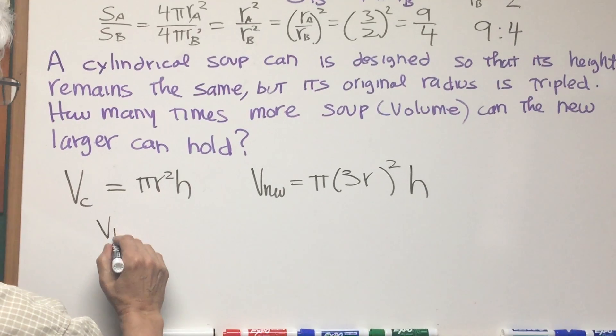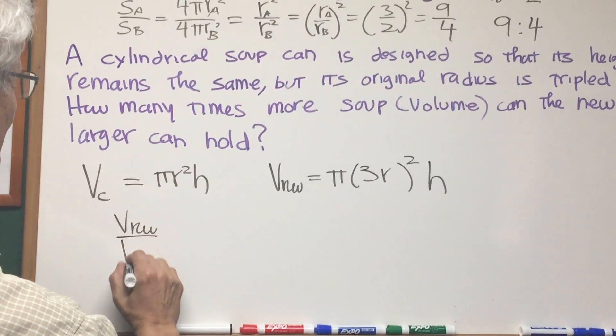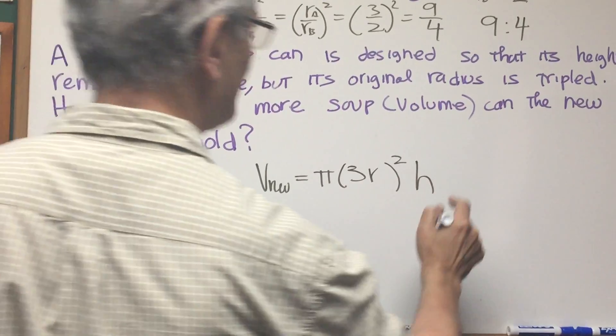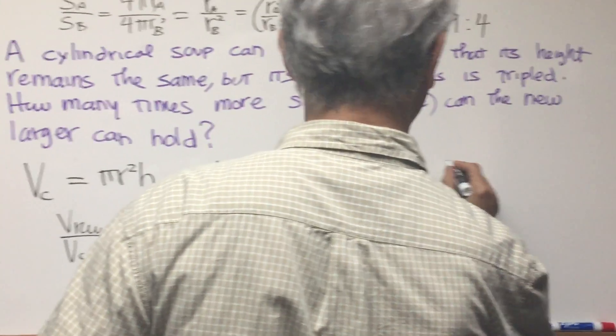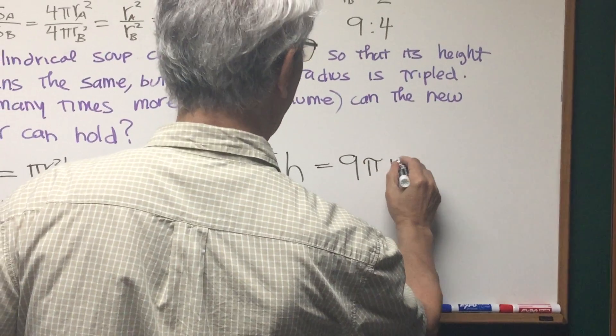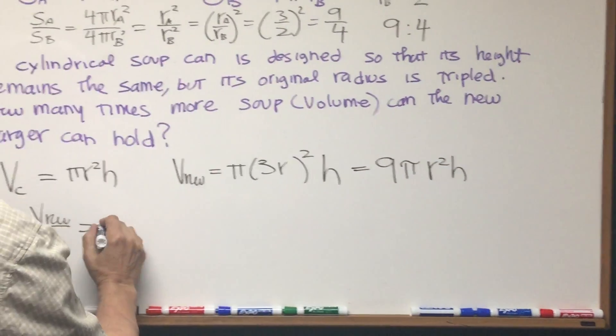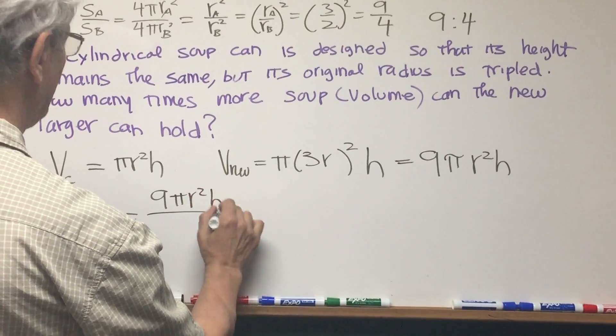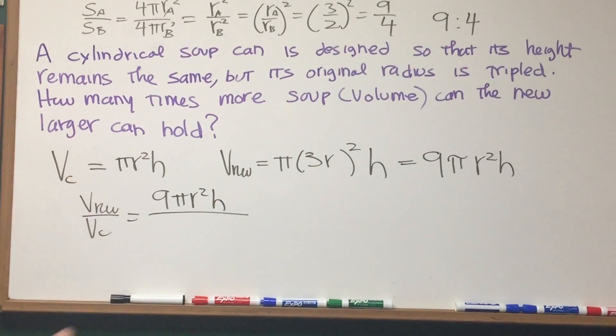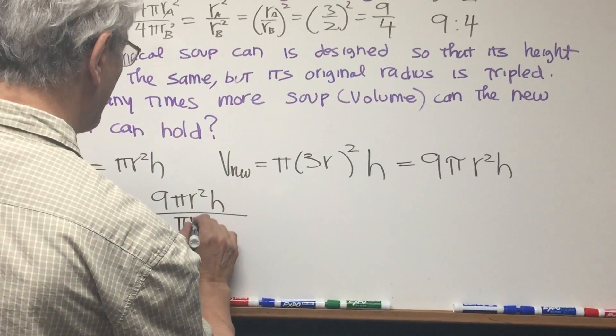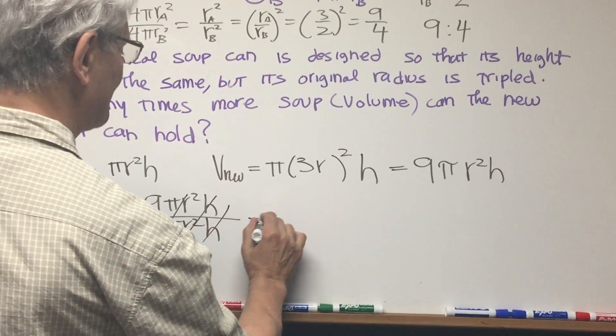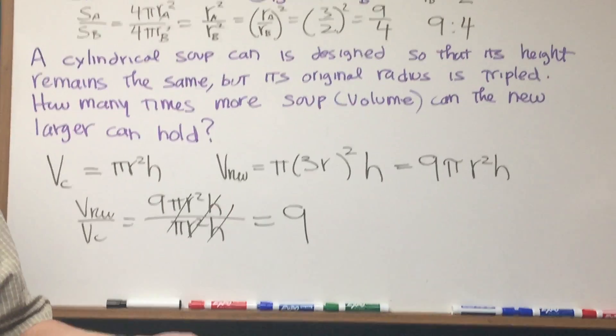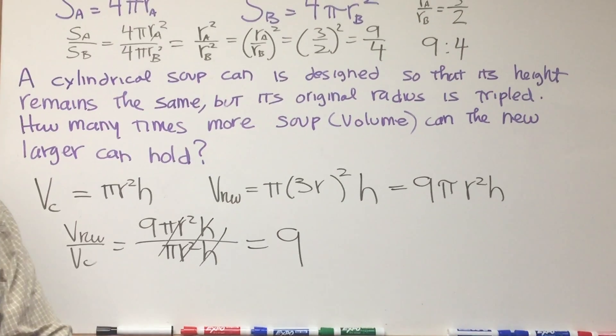So what's the ratio of the new volume to the original volume? It's going to be π times (3r)² times h. That'll give us 9πr²h. Okay, so that's going to be 9πr²h, and the volume of the original cylinder is πr²h. And you can see everything cancels out except the 9. The new can can hold 9 times more soup. And that's the way to approach that.